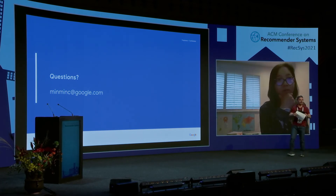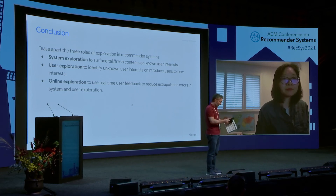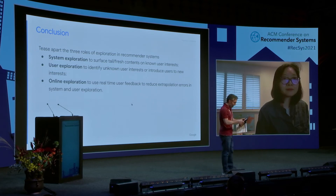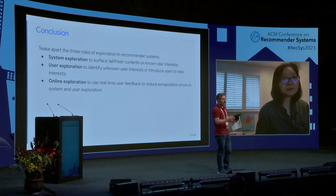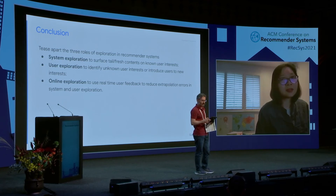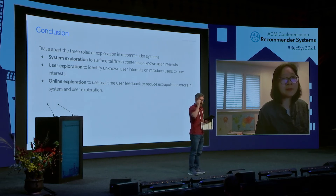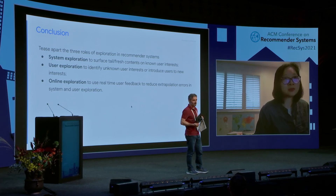Thank you, Min Min, for your great talk. We have a question from Anthony Jameson: do you think it's important for users to know that the system is engaging in exploration? For instance, could this knowledge make them more tolerant of recommendations that are not immediately useful? That's a great question — it's something we are definitely thinking about. For example, if we can make the interface more visible to users, letting them know that some content is focusing more on exploration and trying to understand their preferences better, then users could be more tolerant of mistakes the recommender makes. But that's something we haven't experimented with yet — it's something we are planning to do.